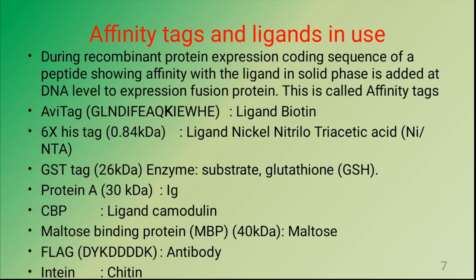In recombinant protein purification, a part of the peptide called affinity tags are attached with the recombinant DNA. During recombinant protein expression, the protein sequence for the peptide showing affinity with a ligand in the solid phase is added at the DNA level during vector construction and expressed as a fusion protein. This kind of addition of peptide molecule is called affinity tags.